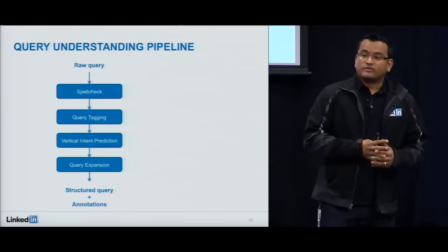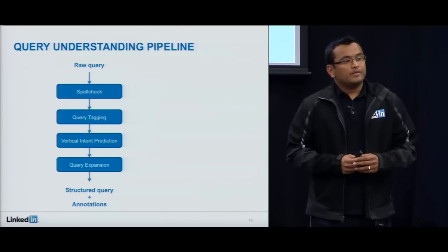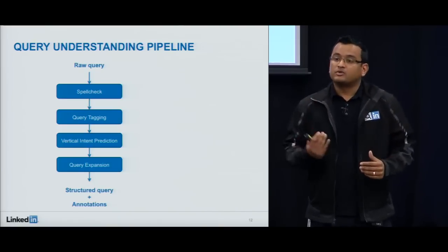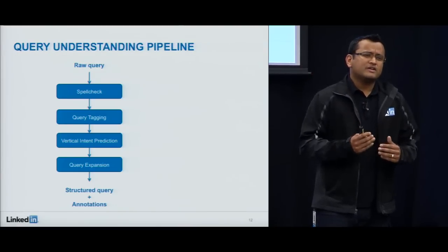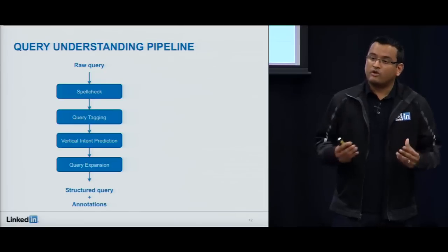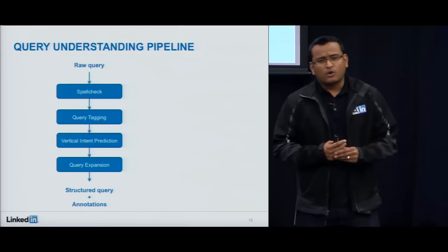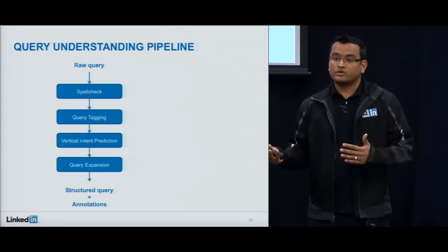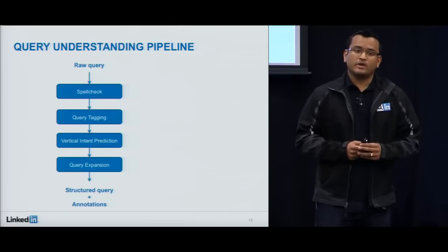Now I want to walk through the query understanding pipeline at LinkedIn. Once you enter your raw query string in the search box, various things happen to it before it's sent to the index for retrieval. The goal is two-fold: first, convert the raw query into a structured form more likely to have good recall and precision when it hits the index; and second, generate annotations or hints that the scorer can use to more intelligently rank results. Today I'll cover four main components: spell check, query tagging, vertical intent prediction, and query expansion.